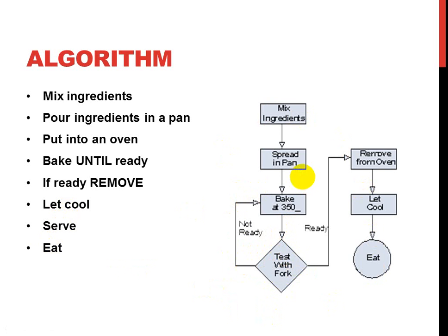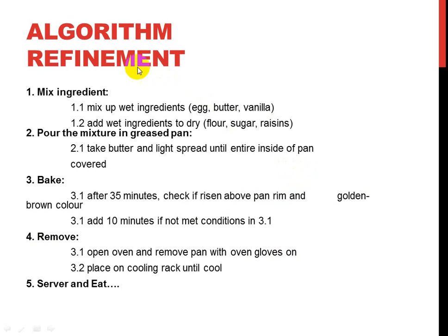An algorithm gets refined through algorithm refinement — you start with a category of the step and then the refined steps underneath. So 'mix ingredients' actually includes: 1.1 mix up wet ingredients, and 1.2 add wet ingredients to the dry. Even baking has the minutes described, checking if risen, and 'remove' and 'serve and eat' could each be refined further. That's essentially what you need to know about algorithms.